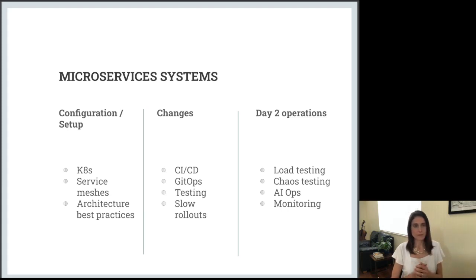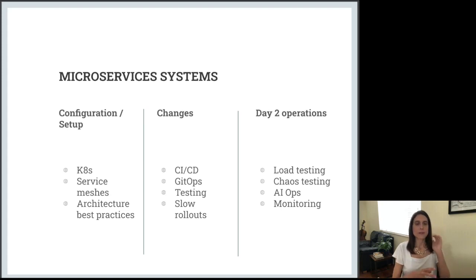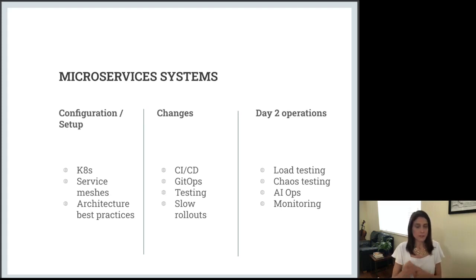The first bucket is configuration and setup — this is where you think about what does my architecture look like, what are the fundamental design choices, for instance do I create service meshes or microservices at all, and what best practices do I want to follow. Then you create your system, and that system needs to change on an ongoing basis — adding new services, but also many changes that happen within existing services.